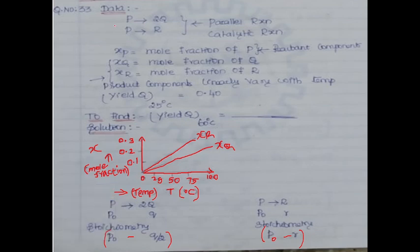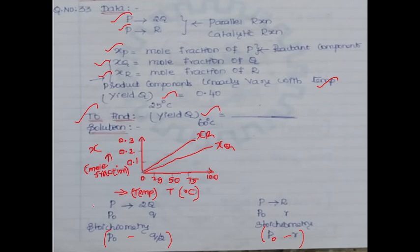We have two parallel catalytic reactions: P gives 2Q and P gives R. Here xP is the mole fraction of P, the reactant component. xQ and xR are mole fractions of Q and R, the product components. Product components linearly vary with temperature. Yield of Q at 25°C is equal to 0.40. The objective is to determine the yield of Q at 60°C.